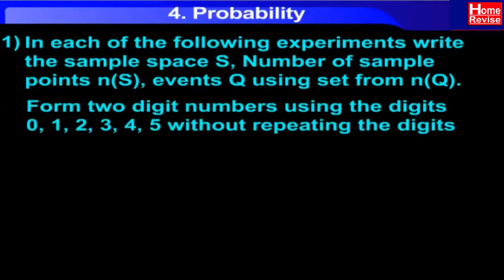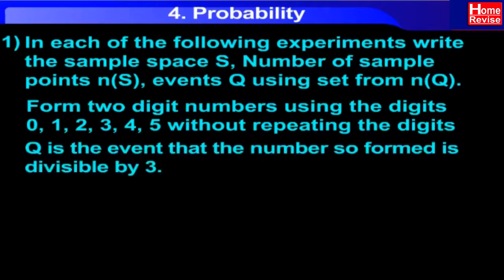Form two-digit numbers using the digits 0, 1, 2, 3, 4, and 5 without repeating the digits. Q is the event that the number so formed is divisible by 3.